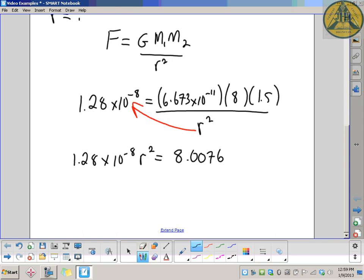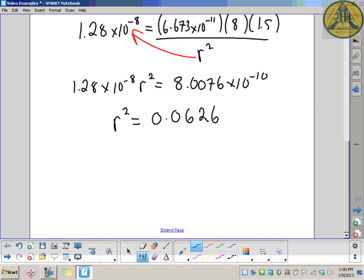That equals 8.0076 times 10 to the negative 10. So r squared equals, divide both sides by the 1.28 times 10 to the negative 8, gives us 0.0626.